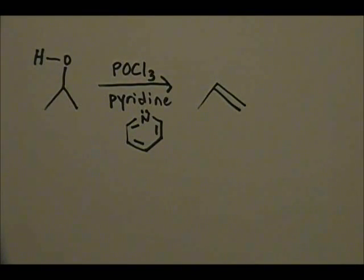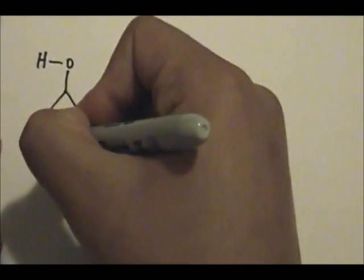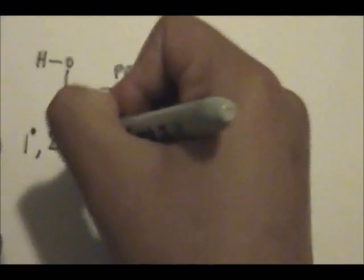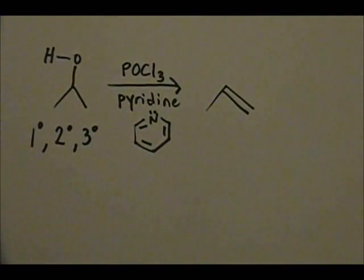You can use these reagents to react it with a primary, secondary, or even tertiary alcohol. And the reaction will proceed to form an alkene product. So this reaction works with all three types of alcohol: primary, secondary, or tertiary alcohols. So keep that in mind. That's very important.